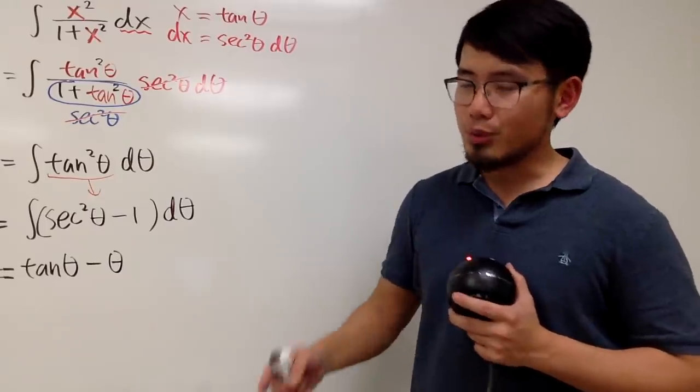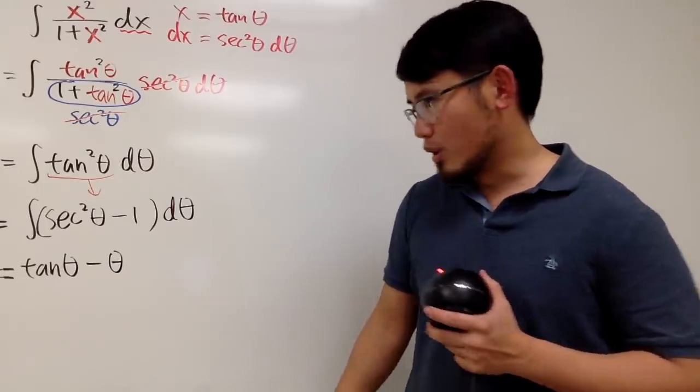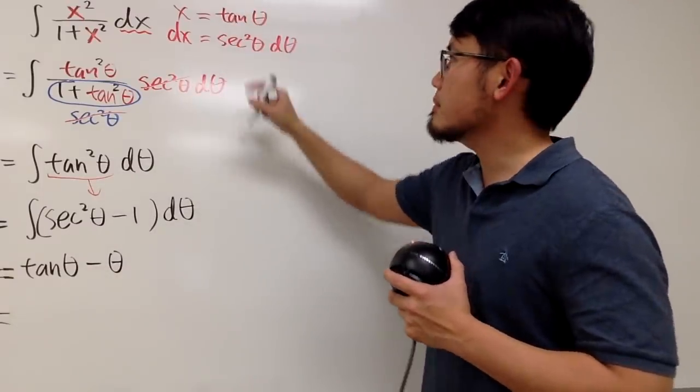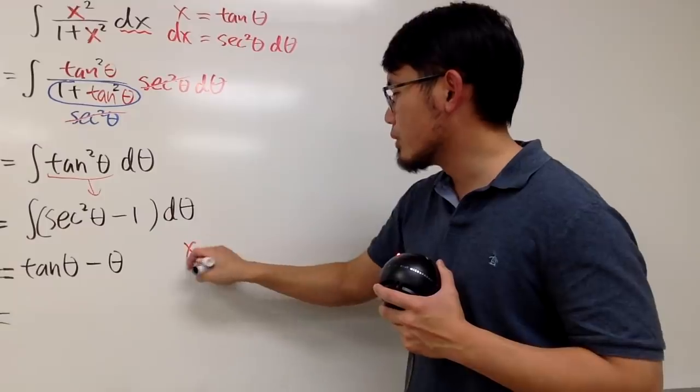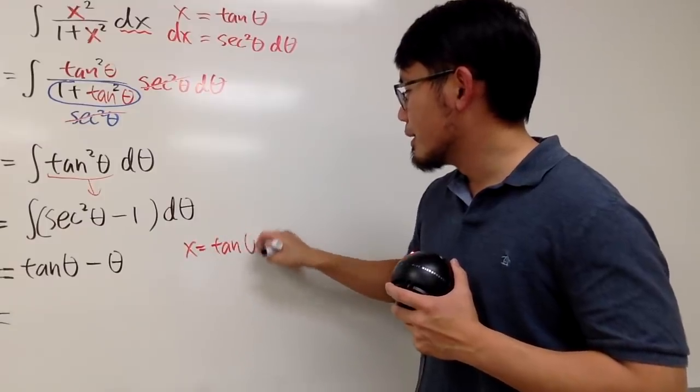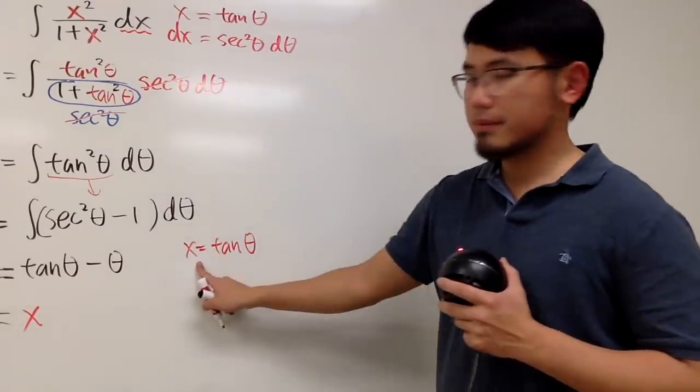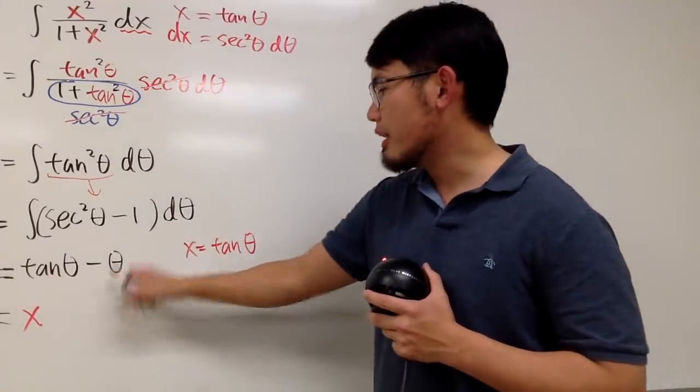Now, we just have to go back to the x world. Well, as we can see, referring back to the original substitution, we know x is equal to tangent theta. So this right here is, of course, just x.